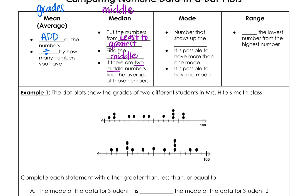The next one is mode. I like to say the mode is the most — basically, it's the number that repeats the most. It's the one you see over and over again. It's possible to have more than one mode — for example, if I had 1, 2, 2, 3, 3, 3, 7, then my mode would be both 2 and 3 because they repeat the same amount of times. And if no numbers repeat, you would have no mode.